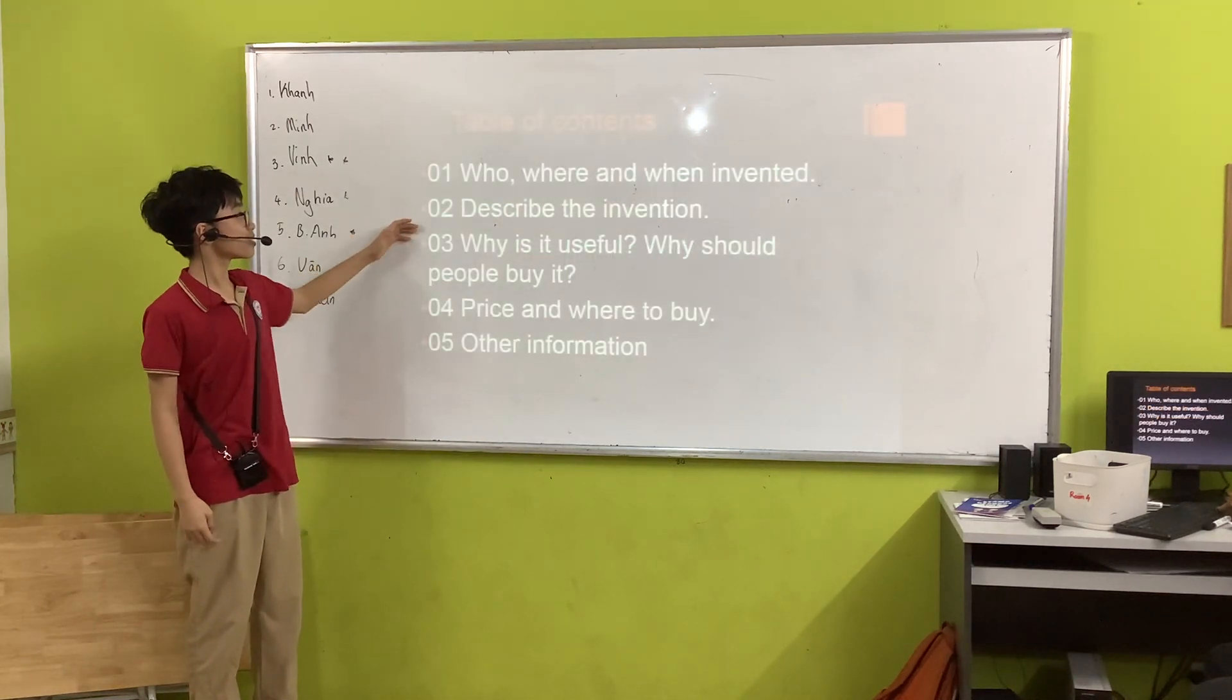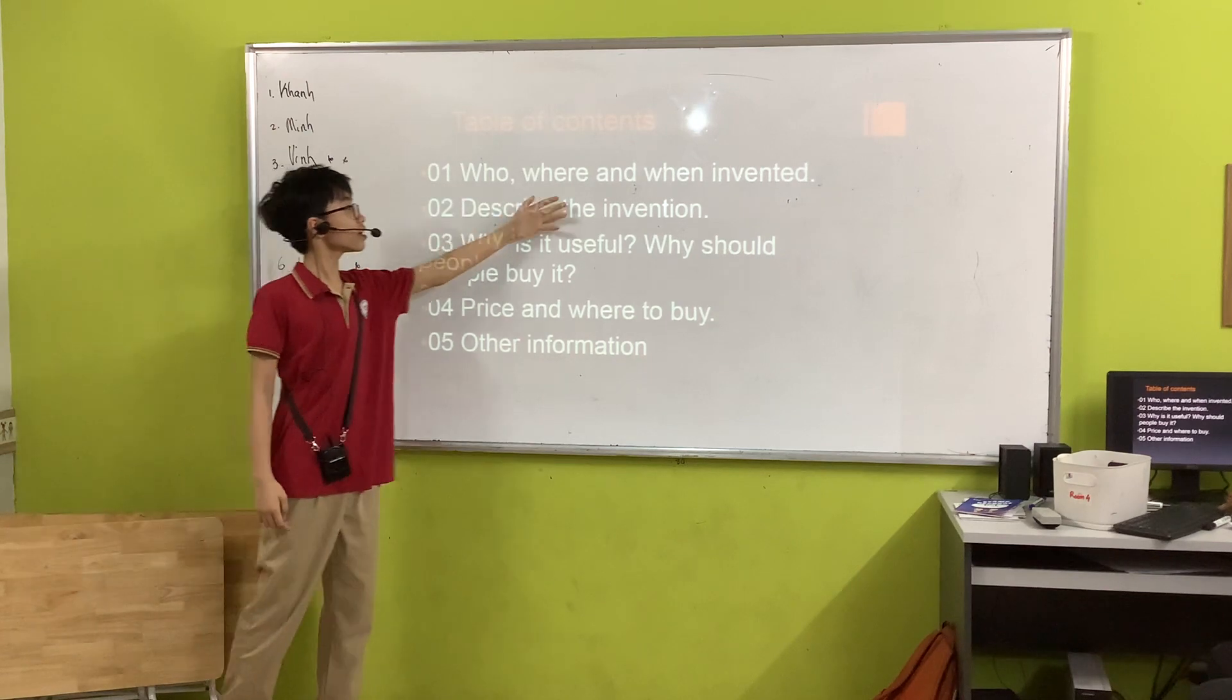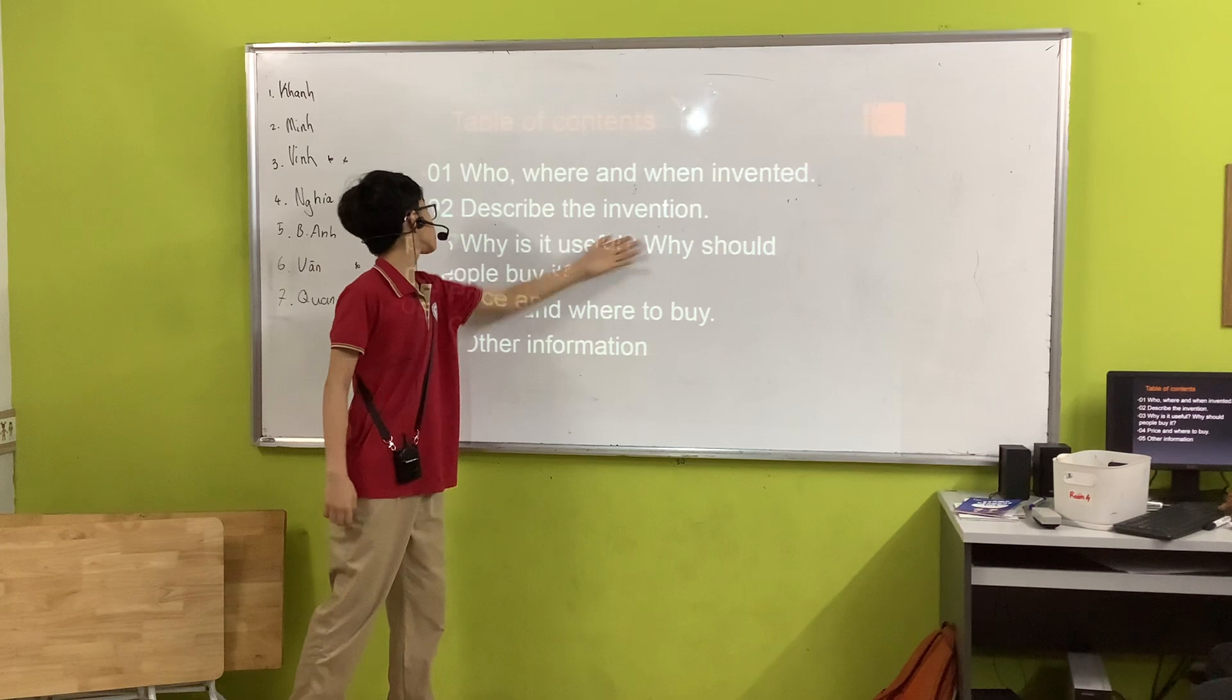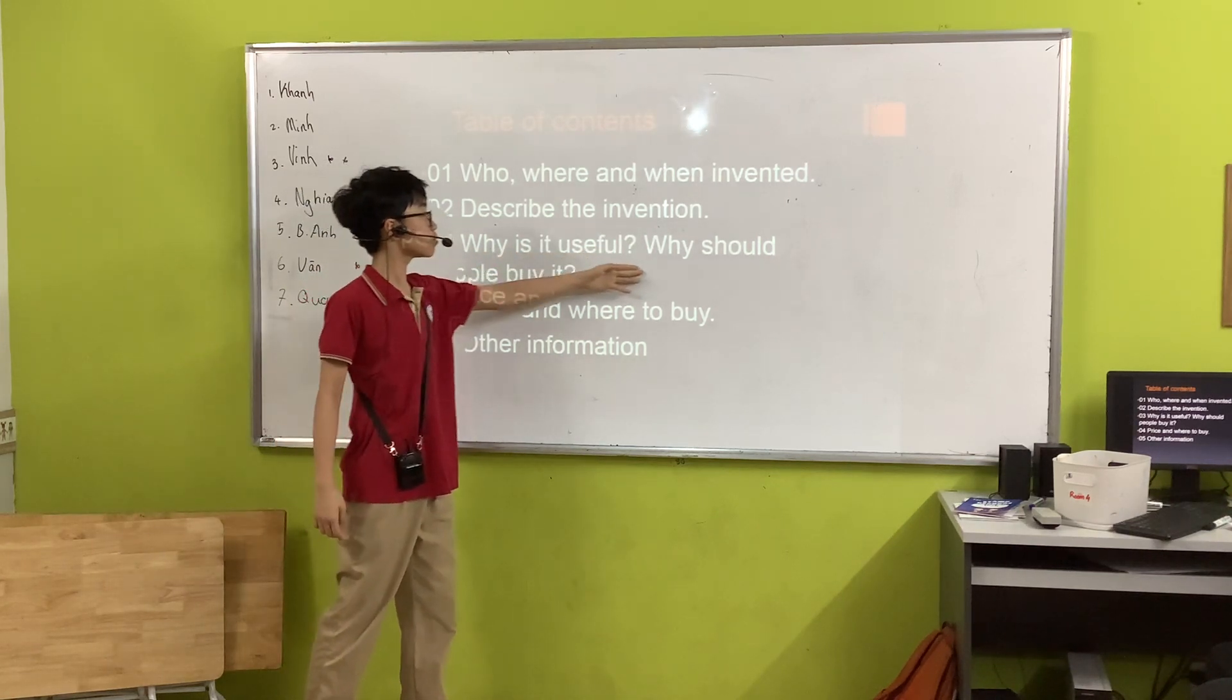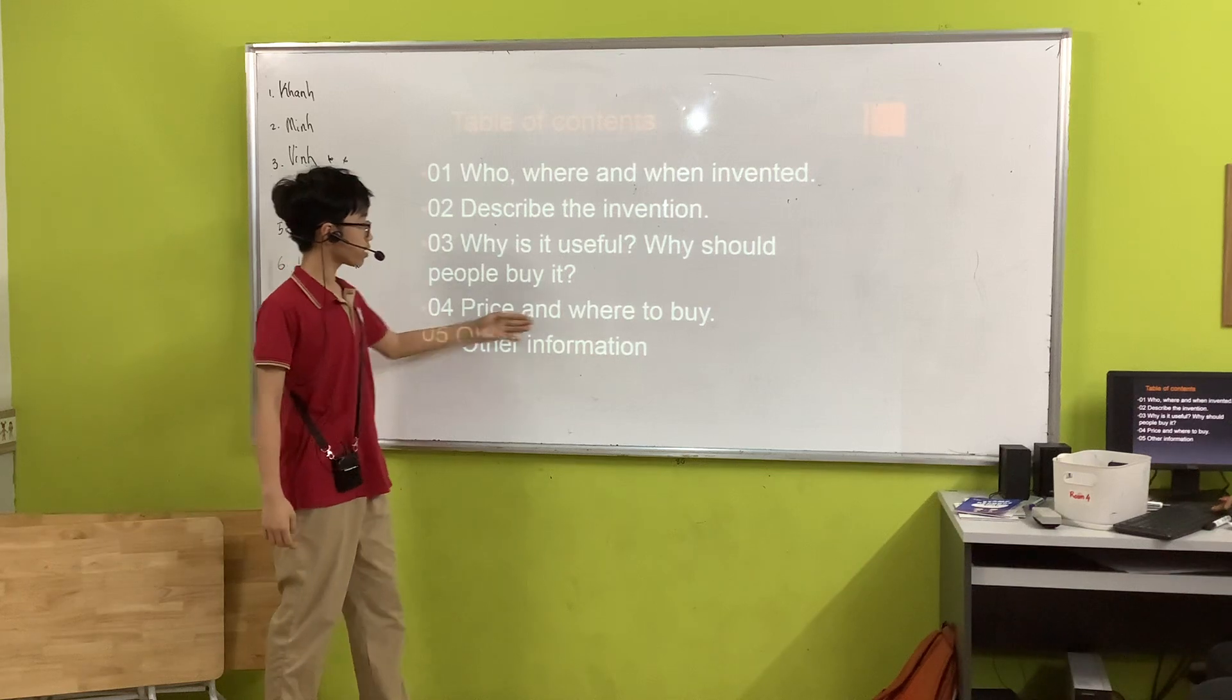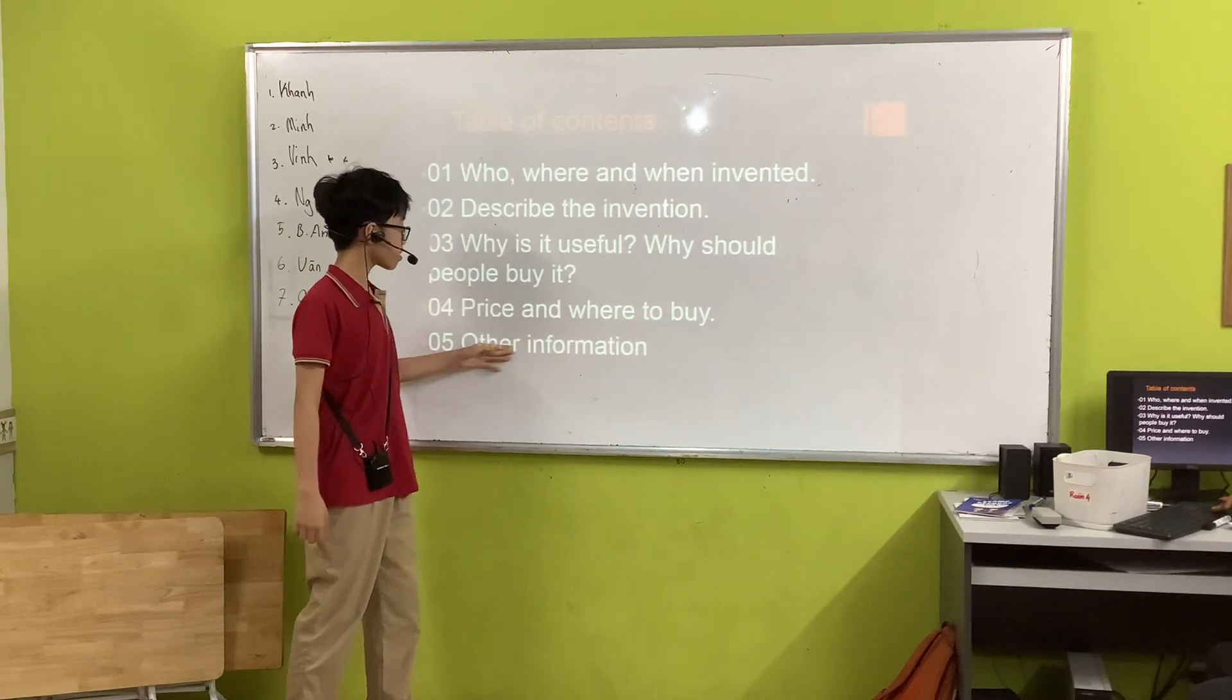Table of Contents: 1. Who, where, and when invented. 2. Describe the invention. 3. What is it? 4. Why should we buy it? 5. Price and where to buy. 6. Other information.